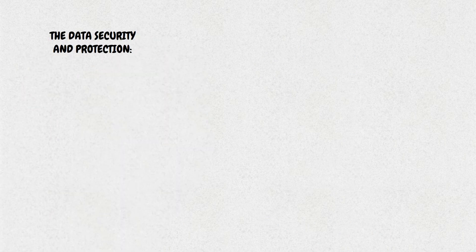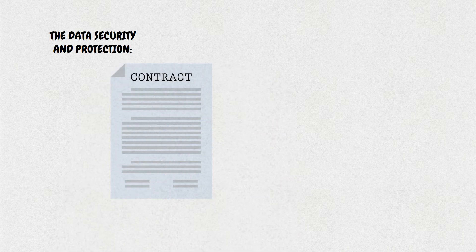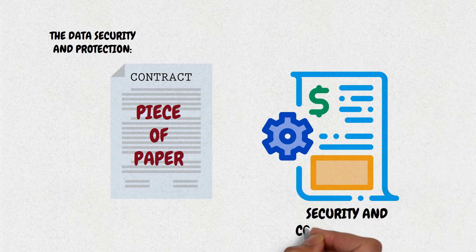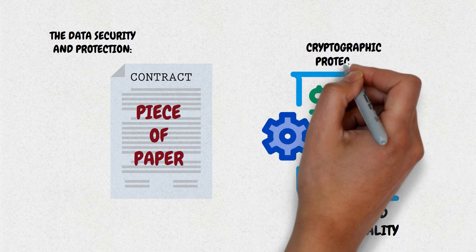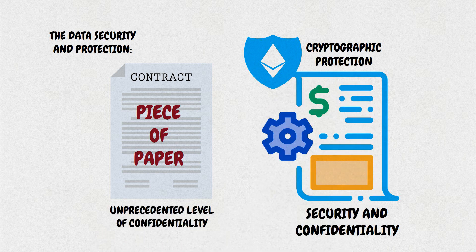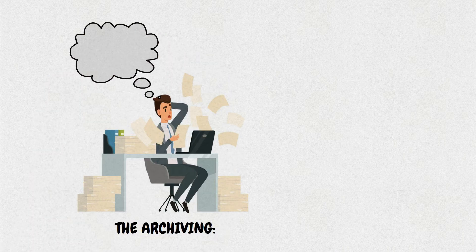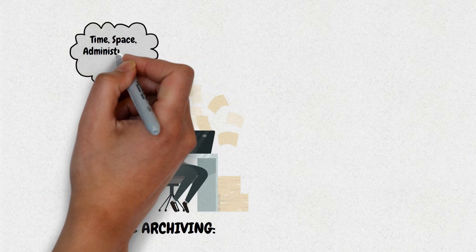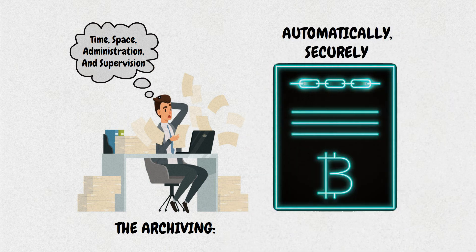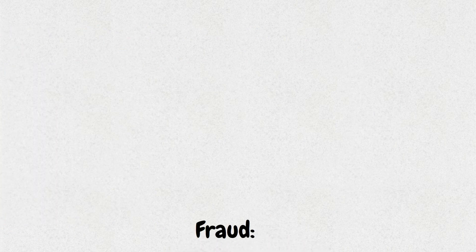Data security and protection: unlike a traditional contract, which is merely a piece of paper, a smart contract can offer a qualitatively new level of security and confidentiality. The cryptographic protection of blockchain technology allows an unprecedented level of confidentiality, especially if the contract is stored on a private rather than a public ledger. Archiving traditional contracts requires time, space, administration, and supervision, whereas with smart contracts it happens automatically and securely.